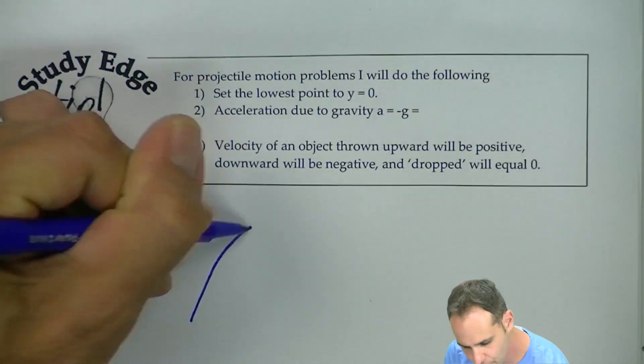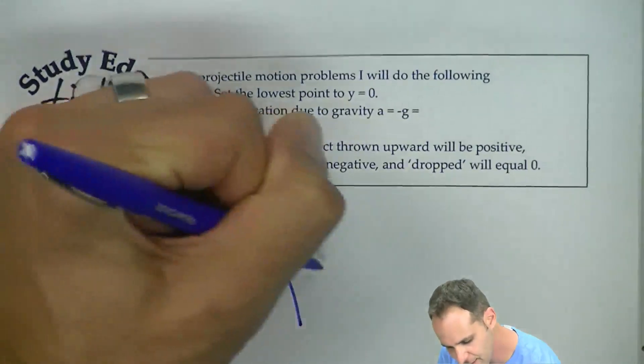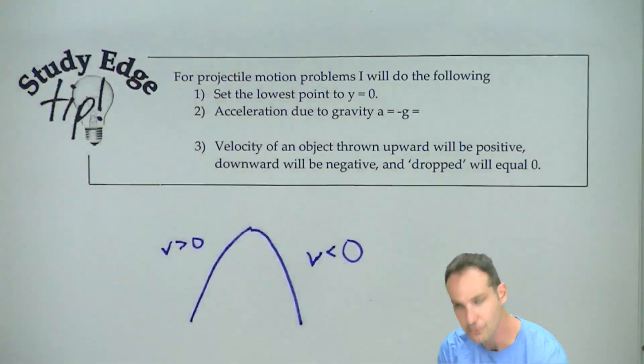If an object is going upward, the velocity is going to be positive, and on its way down, the velocity is negative. I think we all can agree upon that.